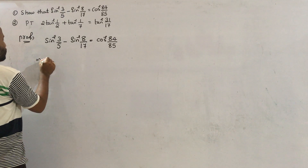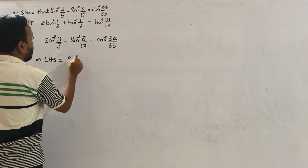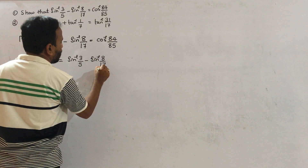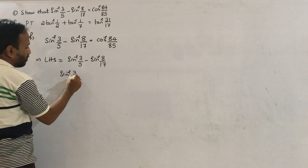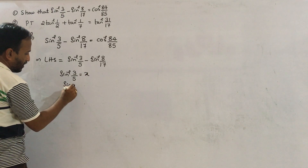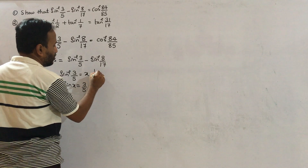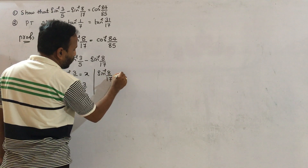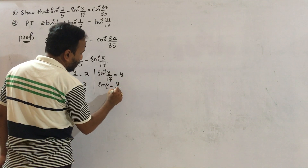See here, LHS equals sin inverse of 3 by 5 minus sin inverse of 8 by 17. Let sin inverse of 3 by 5 equal x, so sin x equals 3 by 5. Next, let sin inverse of 8 by 17 equal y, so sin y equals 8 by 17.